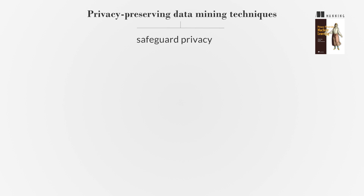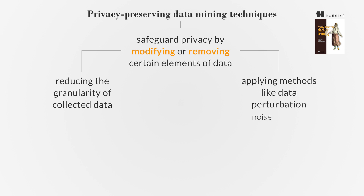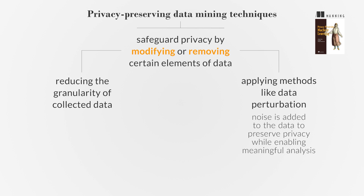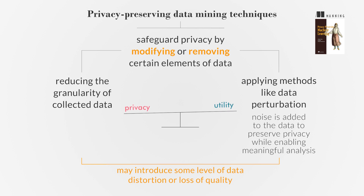Privacy-preserving data mining techniques aim to safeguard privacy by modifying or removing certain elements of data. This can involve reducing the granularity of collected data or applying methods like data perturbation, where noise is added to the data to preserve privacy while enabling meaningful analysis. However, it is important to acknowledge that these privacy-preserving techniques may introduce some level of data distortion or loss of quality.